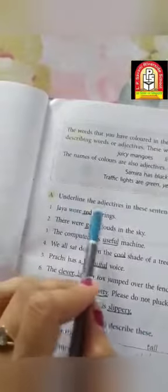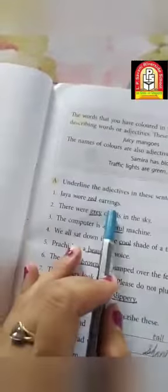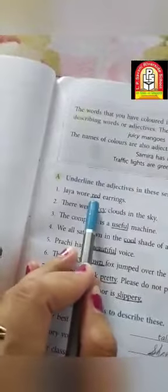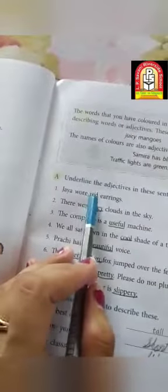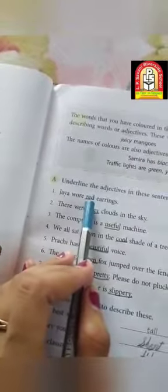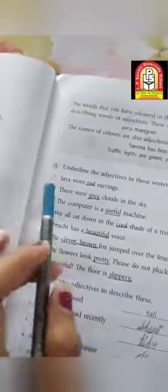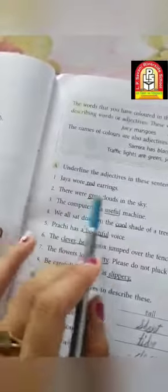Now first is underline the adjectives in these sentences. First is Jaya wore blank earrings. Jaya wore red earrings. Red is the color so it is an adjective, so we will underline red. Second, there were blank clouds in the sky. There were gray clouds. Gray is also a color so we will underline gray.